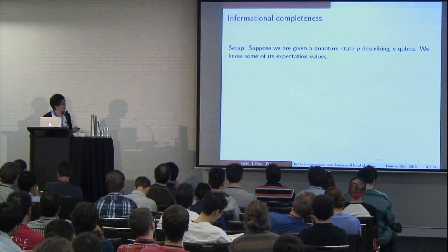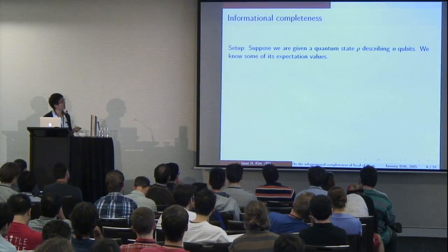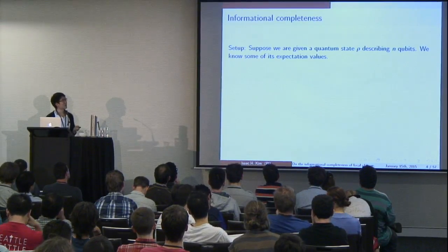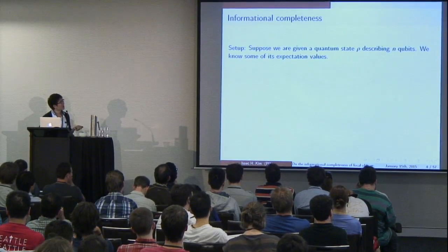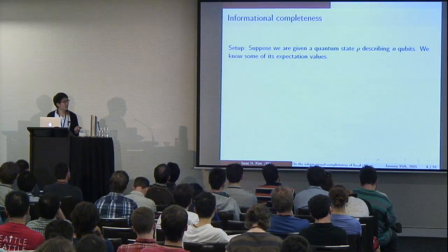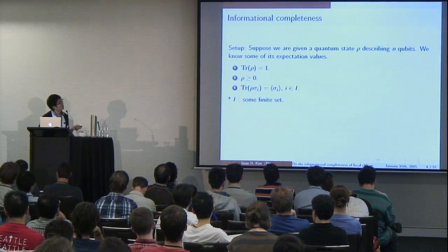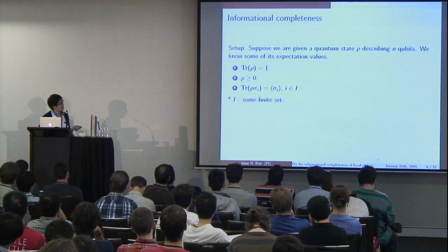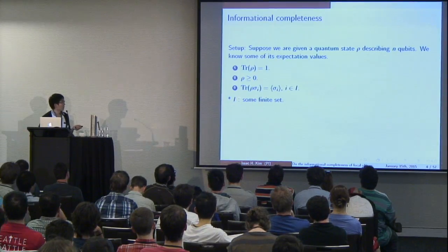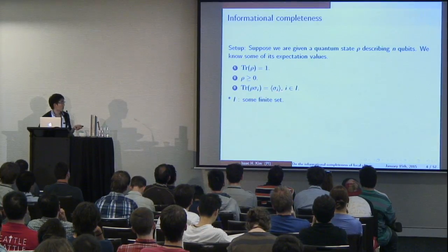So let me first define some notation and set up the problem. Suppose we are given a quantum state rho which describes N qubits, and we know some of its expectation values. We can write down the following set of equations: the first is that the state is normalized; the second is that it has to be positive semi-definite; and the third is that if you calculate the expectation value of some observable sigma_i, it gives what you measured.